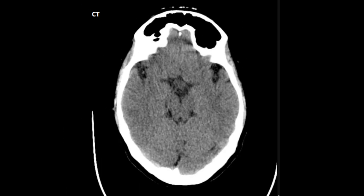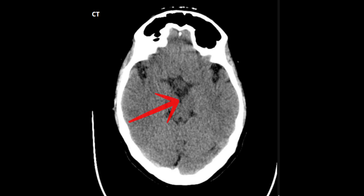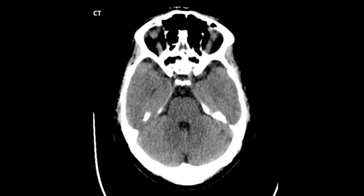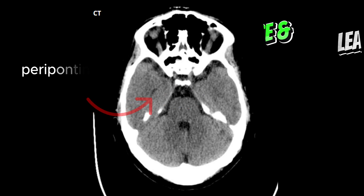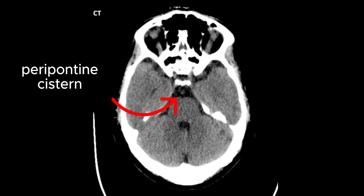This one lying between the peduncles of the midbrain is named accordingly as the interpeduncular cistern. Moving towards the base of the brain, this is the peripontine cistern as it lies around the pons.